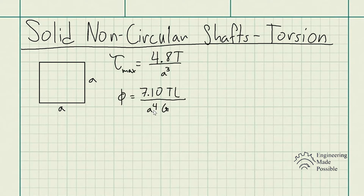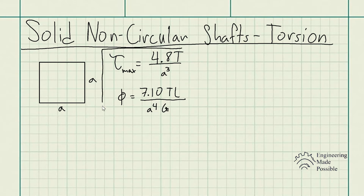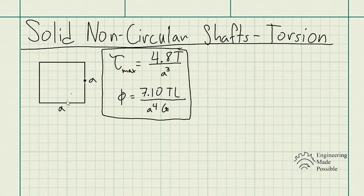The maximum shear stress that this square shaft would experience is 4.8 times the torque divided by A to the power of 3. And the angle of twist is 7.10 times the torque times the length of that shaft divided by A to the power of 4, divided by the shear modulus. These are the equations for this square cross-sectional shaft, and the maximum shear stress would be experienced at the center of each of the widths.